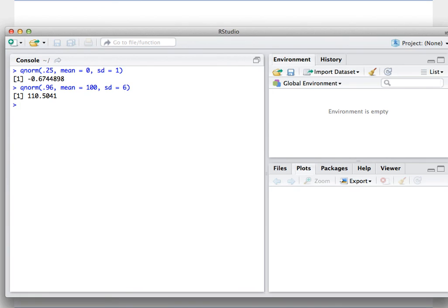And we find that the 96th percentile, or the 0.96 quantile, is 110.5 for this distribution.